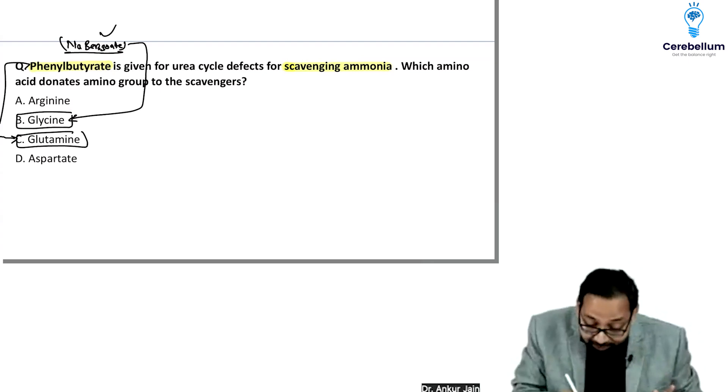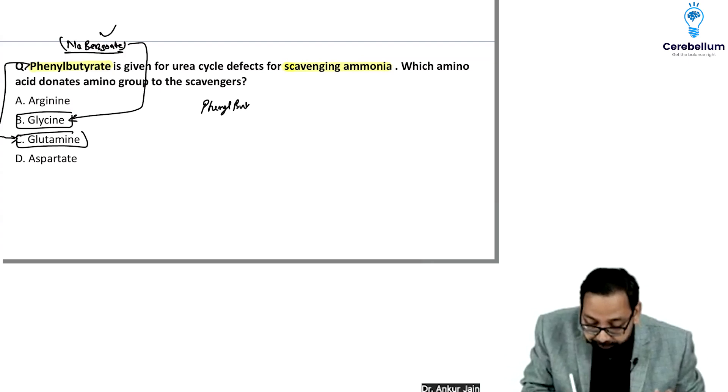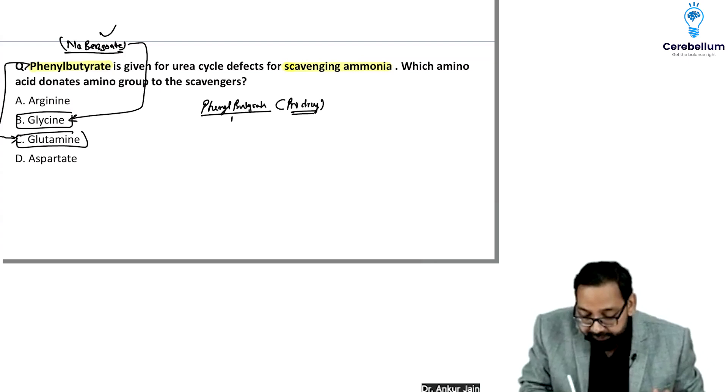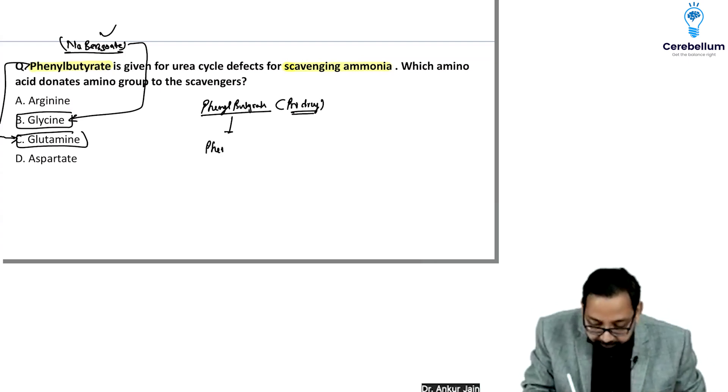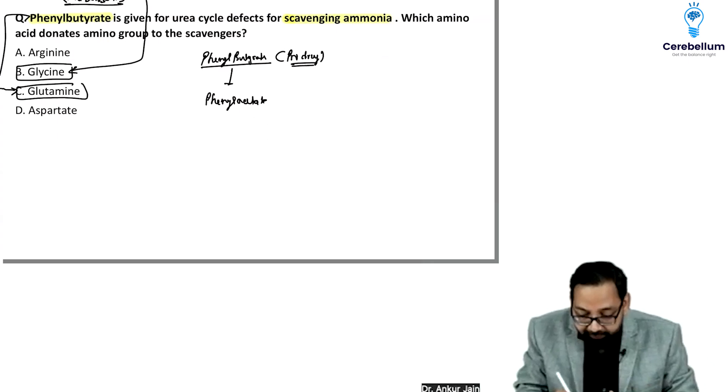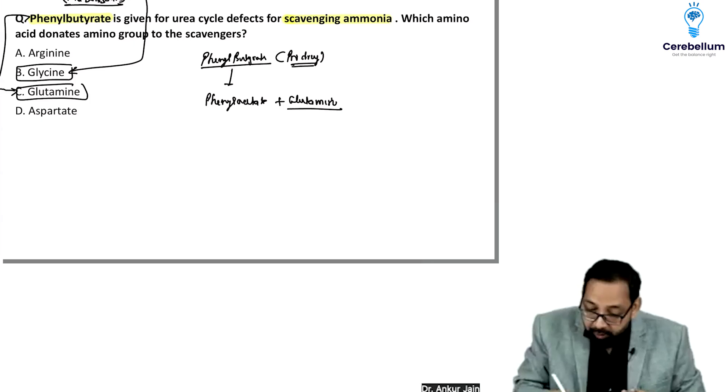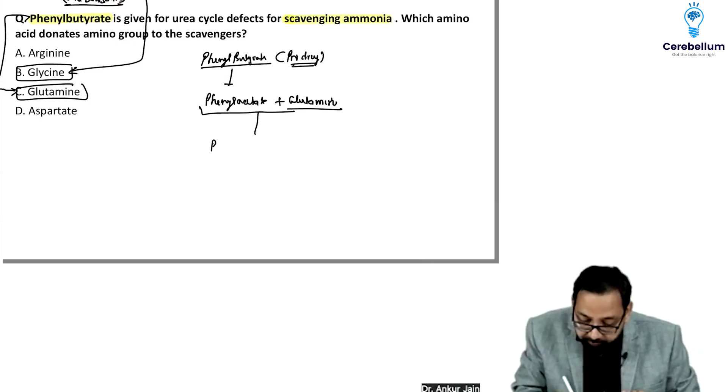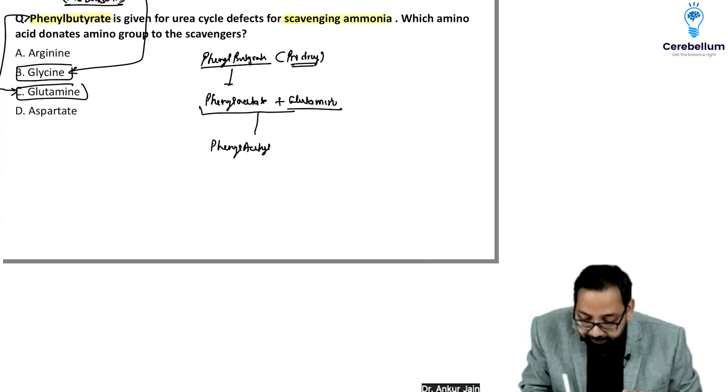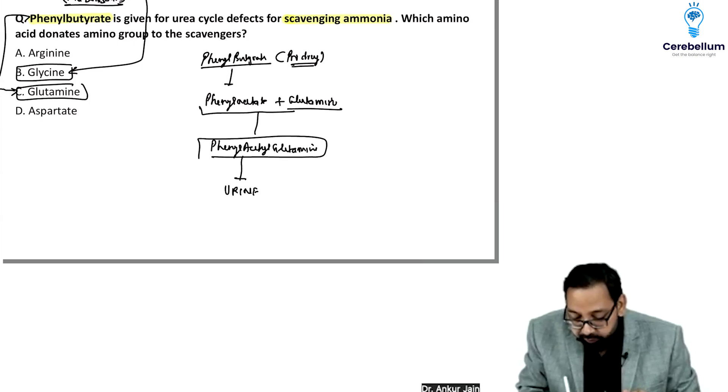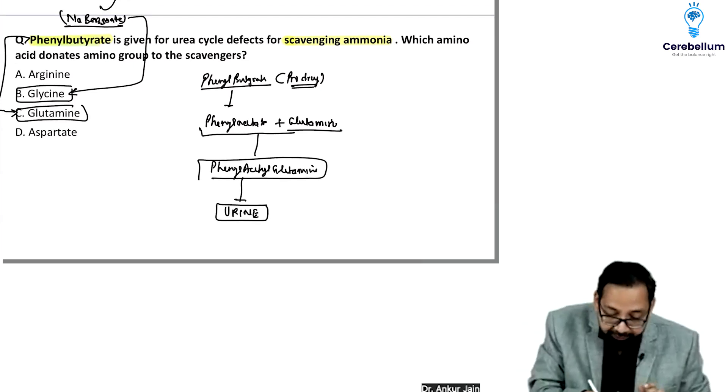Phenylbutyrate is a prodrug converted to phenyl acetate, which then binds to glutamine. It's converted to phenyl acetyl glutamine, which is water soluble and excreted in urine. So if the question mentions phenylbutyrate, the answer is glutamine.